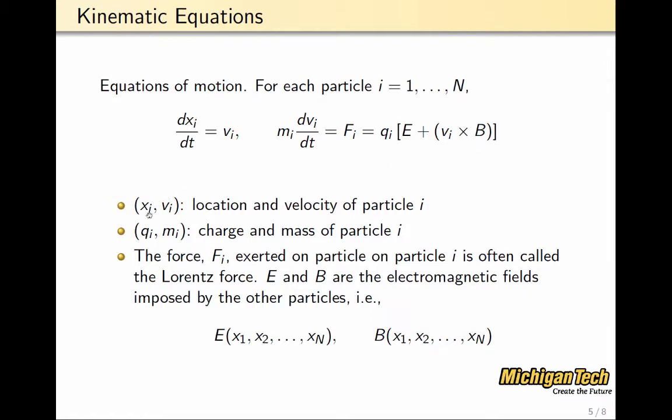So, in this equation, xi and vi are the location and velocity of particle i, qi and mi are the charge and mass of particle i, and once again, this is called the Lorentz force.